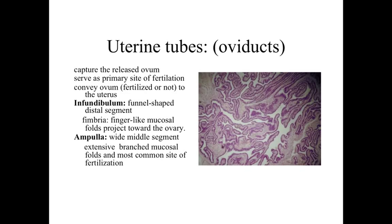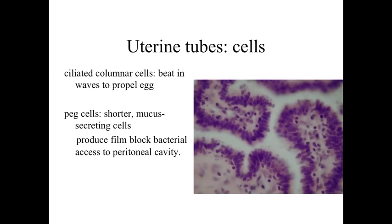When we take a look at the uterine tubes, we start out with a highly folded, very complex structure of mucosal folds within the infundibulum. As we go through the oviducts, it becomes much less folded with a much smaller lumen. The lining cells include ciliated columnar cells capable of beating and propelling the egg along its journey, as well as shorter mucus-secreting peg cells that produce a film blocking bacterial access to the peritoneal cavity, creating an undulating surface within the uterine tube mucosa.